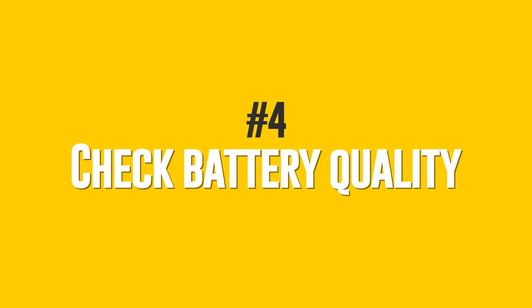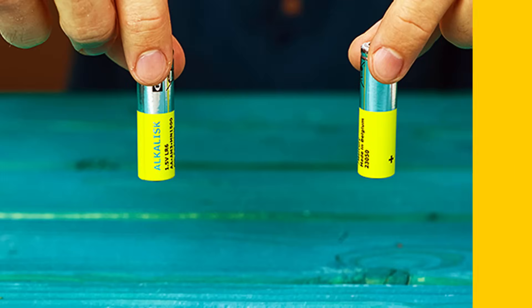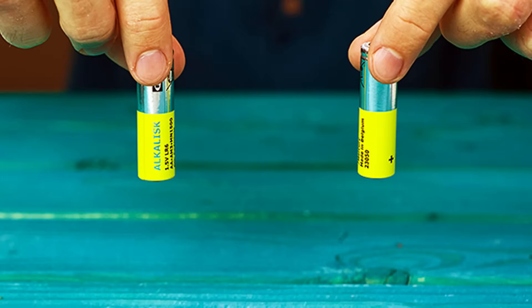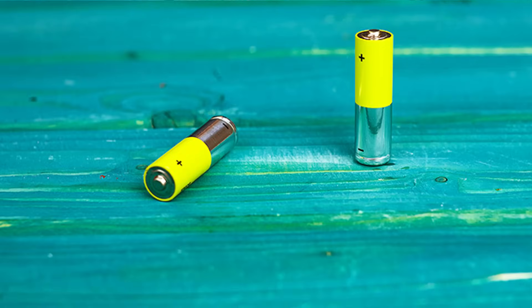Number 4: Check Battery Quality. It's easy to tell a good battery from a bad one. Raise two batteries half an inch above a table and let them fall. The battery that bounces and falls is empty.